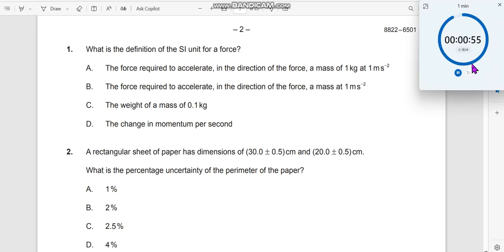So, what is the definition of the SI unit of a force? Start. The force required to accelerate in the direction of the force a mass of 1 kg at 1 meter per second.